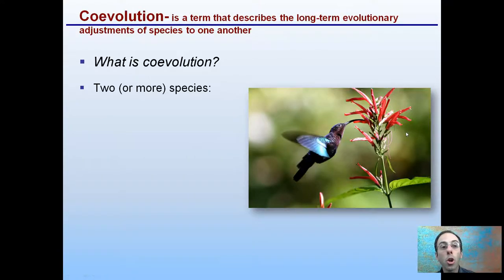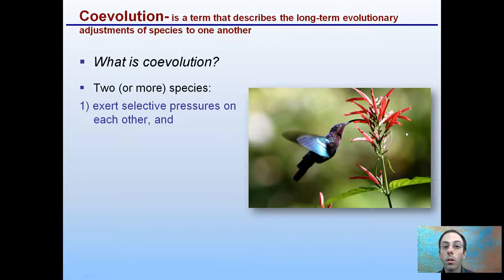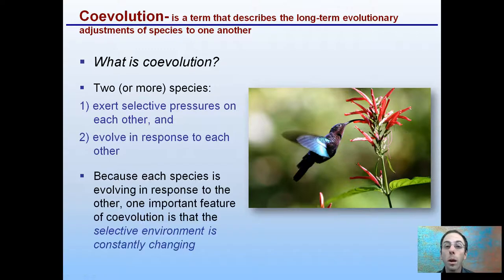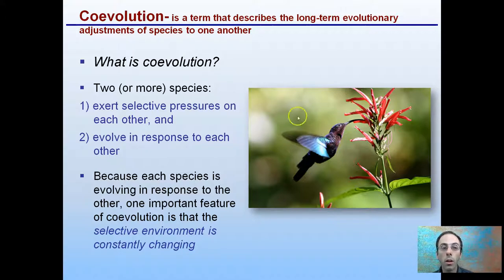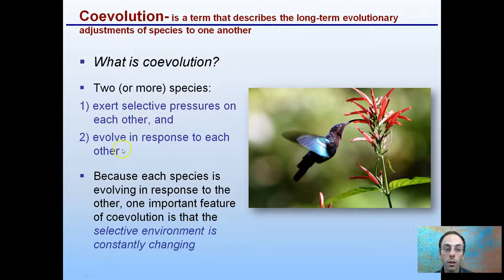We have something called coevolution. It's a term that describes the long-term evolutionary adjustments of a species to one another. So it's two or more species that exert selective pressures on each other and evolve in response to each other.